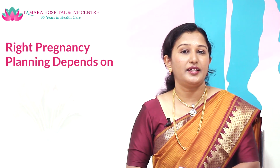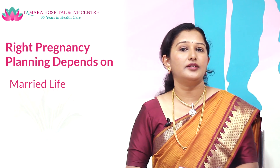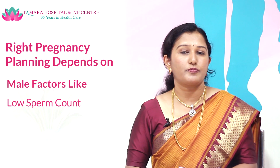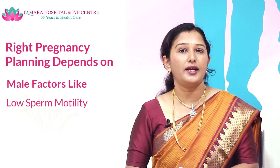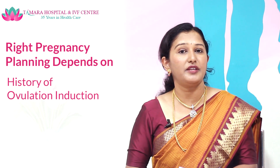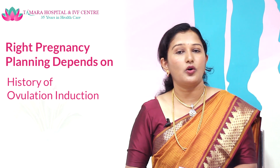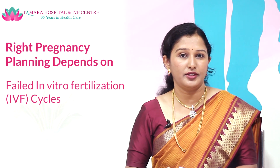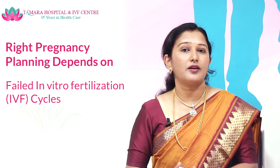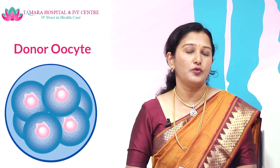Right planning depends on the age of the patient, the cause of infertility, the duration of married life, and any other associated factors like endometriosis, tubal block, associated male factors like low sperm count or low motility, and whether the patient has taken any previous ovulation induction, IUI cycles, or any failed IVF cycles. These factors all help decide whether the patient should go for self oocyte or donor oocyte.